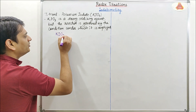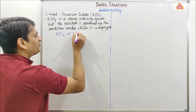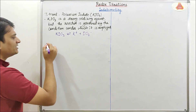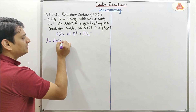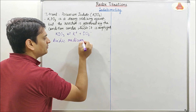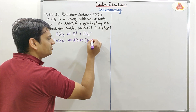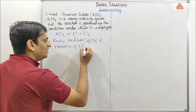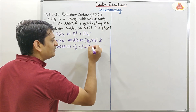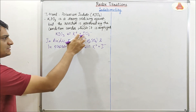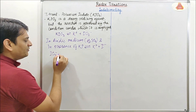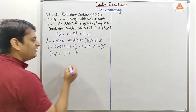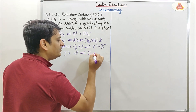KIO3 will dissociate in the form of K+ and IO3 minus. When KIO3 reacts in the presence of an acidic medium — for example from H2SO4 — and in the presence of KI, the KI dissociates into K+ and I minus. Now this IO3 minus will react with I minus and H+ from the acidic medium, and it will be converted into I2 and H2O.